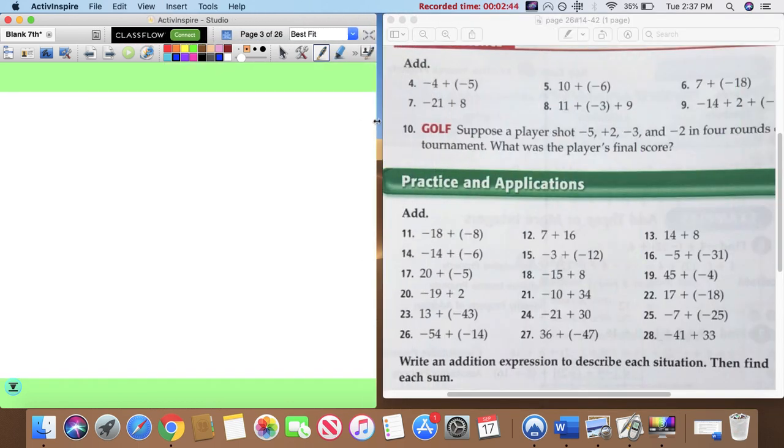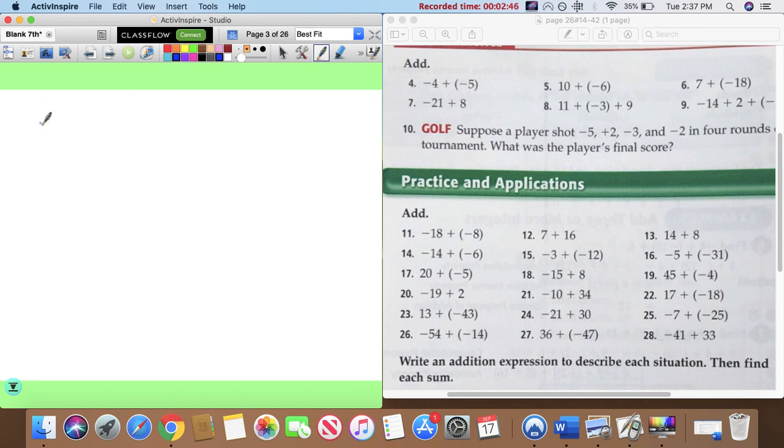Problem 16: seis, negativo cinco más negativo treinta y uno. Espero que ustedes ya están entendiendo que cuando son iguales, son amigos, no? Son negativo, negativo, los dos son amigos. Hay que sumar los dos. Treinta y uno más cinco me sale treinta y seis. Pero, ¿de qué equipo? From what sign? The negatives. So when they're the same sign, we add them.